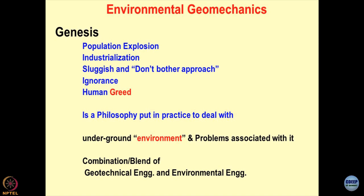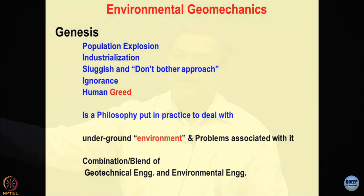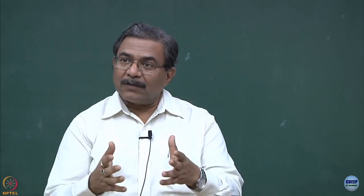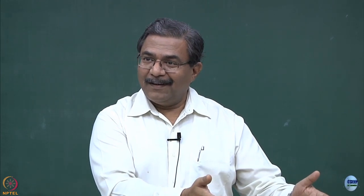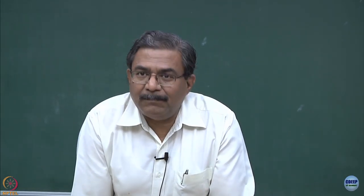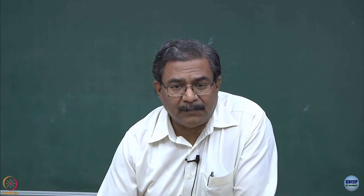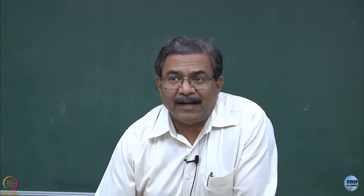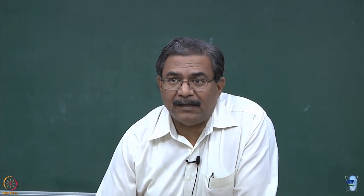Too much industrialization means too much mining and too much power requirement. The more power you require, the more coal you burn; the more coal you burn, the more mining you have to do; the more mining, the more toxics you are producing in the air and stacking on the soil — a catch-22 situation. Should we stop industrialization? We will discuss several examples of what industrialization does to modern society and how environmental geomechanics questions its effects.